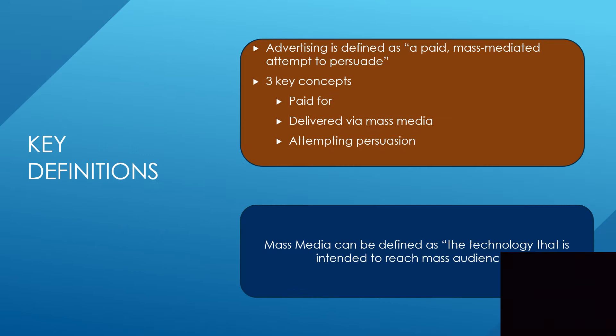A couple of key definitions and concepts to mention are advertising and mass media. Advertising is defined as a paid mass-mediated attempt to persuade, and it must have three key concepts: it has to be paid for, delivered via mass media, and it must attempt persuasion. Mass media is defined as the technology that is intended to reach mass audiences. As an example, an advertisement on a billboard — a picture of somebody selling a pair of shoes — would be the advertising, while the billboard itself is the mass medium.